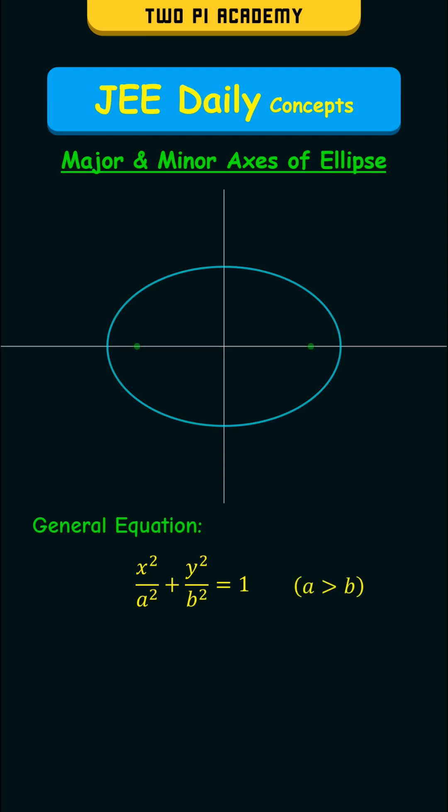Every ellipse consists of two points known as the foci. The line that passes through these two foci is known as the major axis of the ellipse. The points of intersection of the major axis and the ellipse are known as the vertices of the ellipse. The midpoint of these vertices is known as the center of the ellipse.